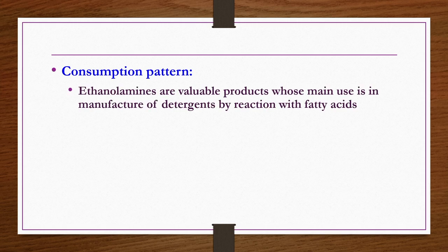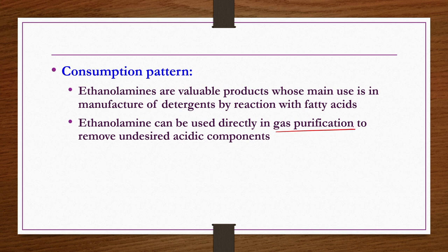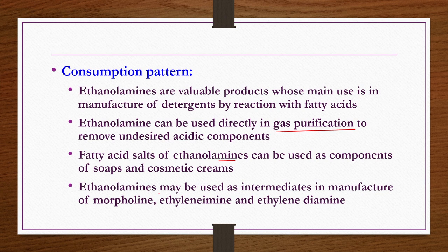The consumption pattern: ethanolamines are valuable products whose main use is in manufacture of detergents by reaction with fatty acids. They can be used directly in gas purification to remove undesired acidic components. Fatty acid salts of ethanolamines can be used as components of soaps and cosmetic creams. Ethanolamines may also be used as intermediates in manufacture of morpholine, ethyleneamine, and ethylenediamine.